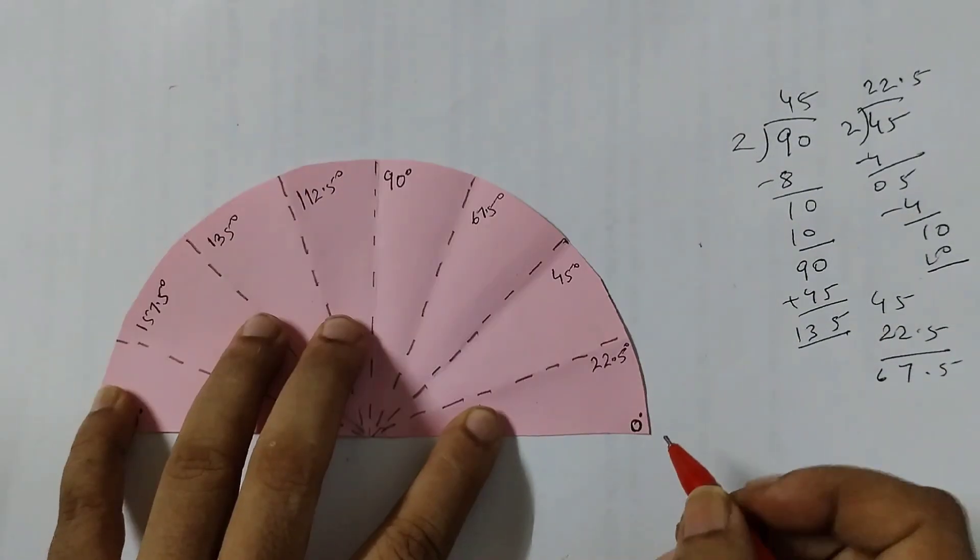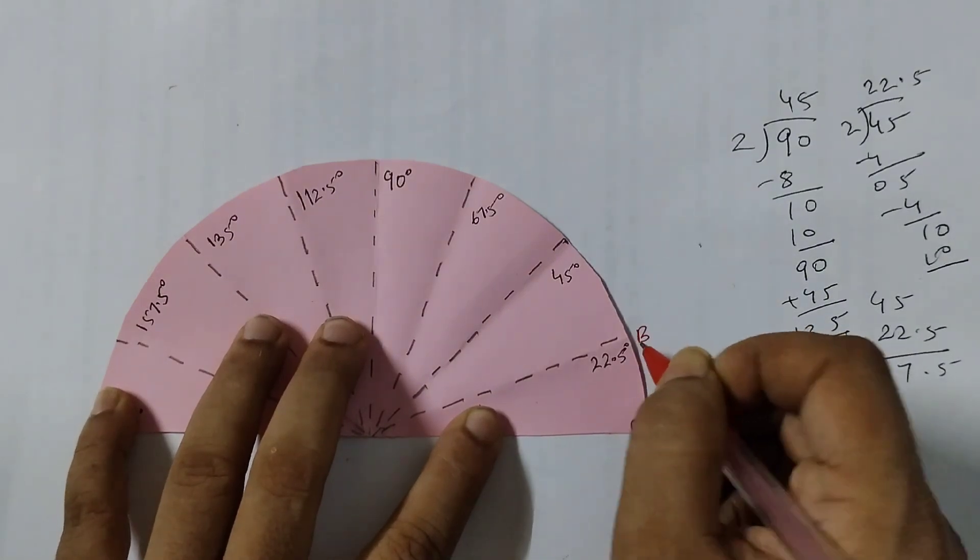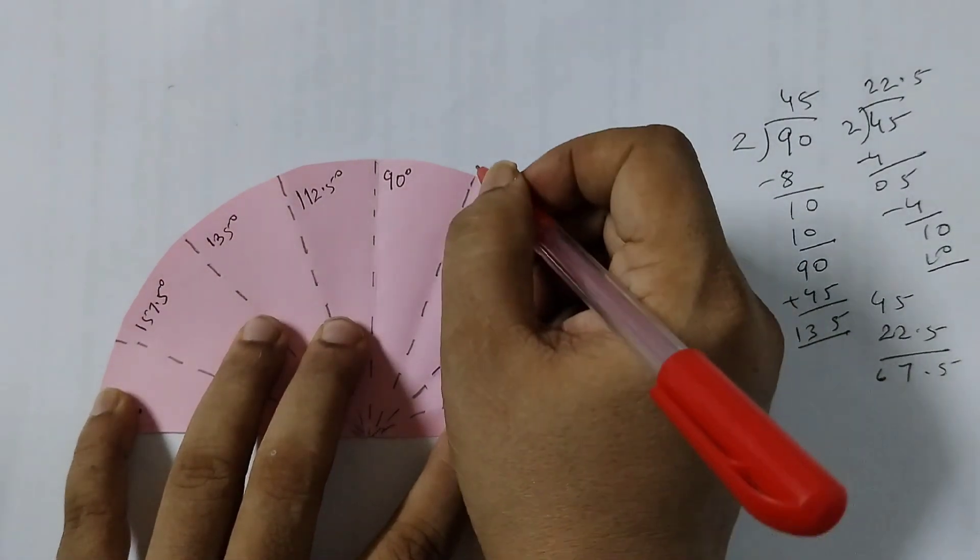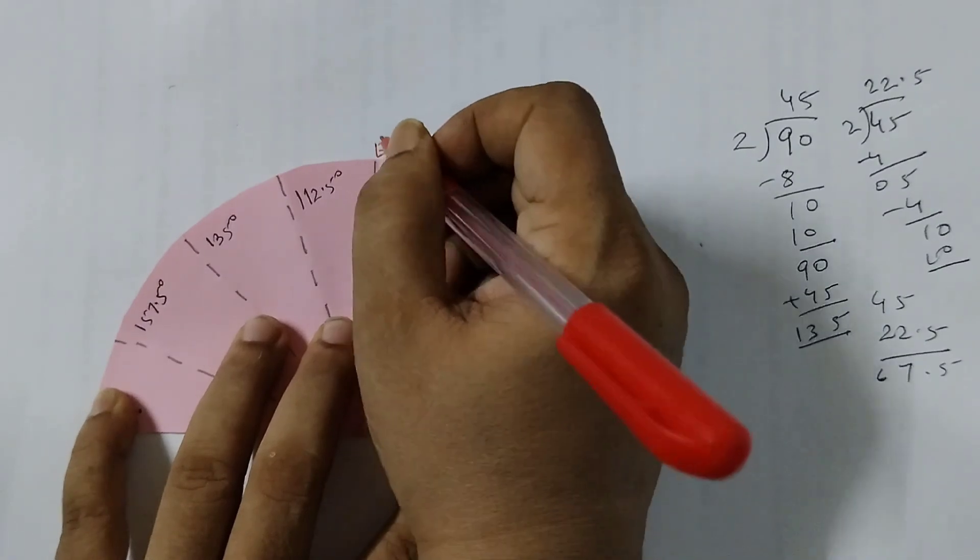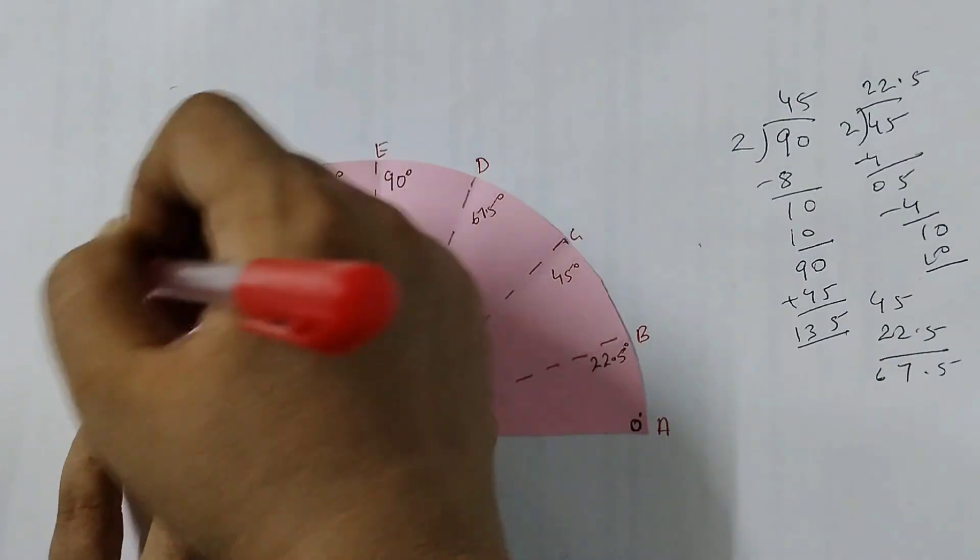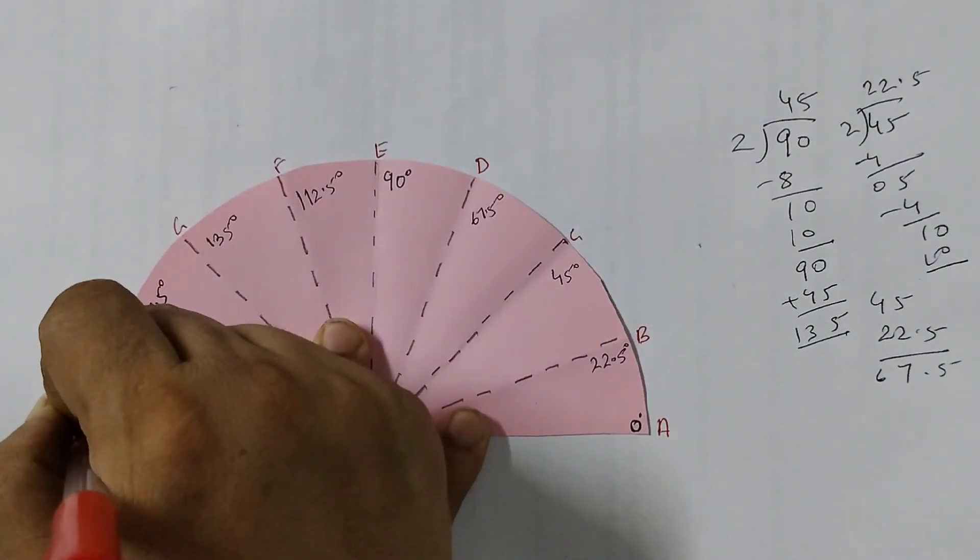Now we will label this: let's say this is A, this is B, C, D, E, F, G, H, I.